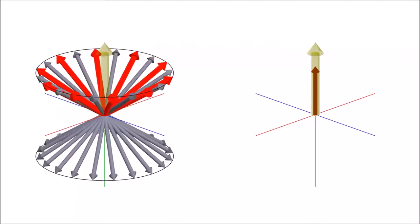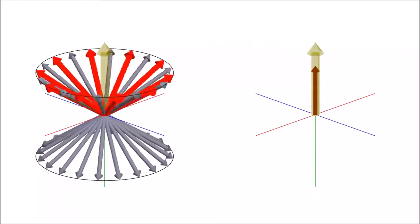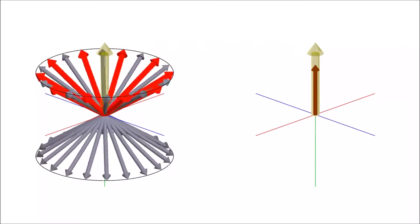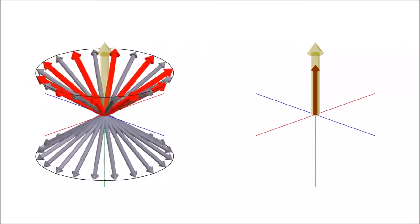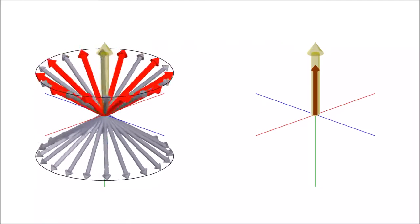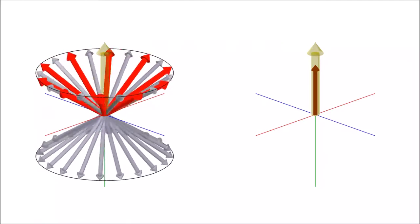This is represented by the red arrows, which remind us that these are the small percentage of the dipoles that have fallen into the lower energy state. Together, they create a net magnetic vector along the z-axis. Let's focus on them for a moment.